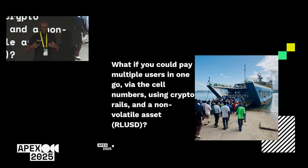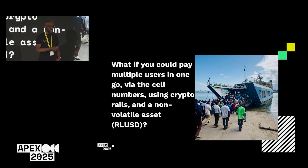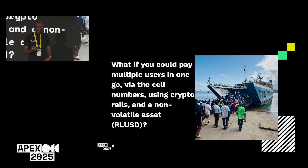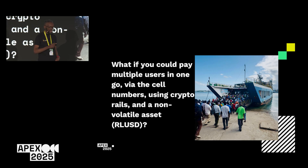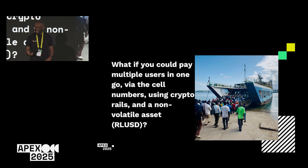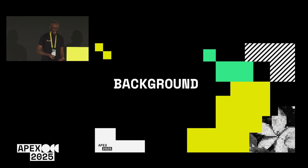At this scale of people, if you are a government making payments to thousands of people, how are you doing this effectively? If you are an NGO making payments to communities affected by some crisis, how are you doing this effectively? At the end of this presentation, hopefully we'll have answered: how could you pay multiple users in one go via their cell numbers using crypto rails and a non-volatile asset? And I'll give a hint — that would be RLUSD.